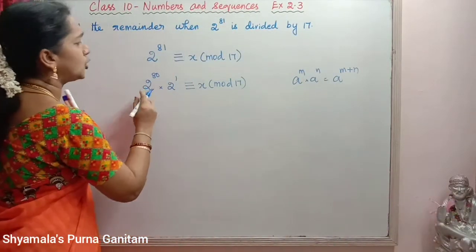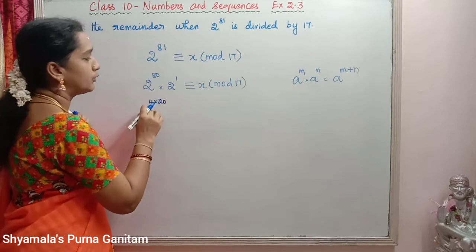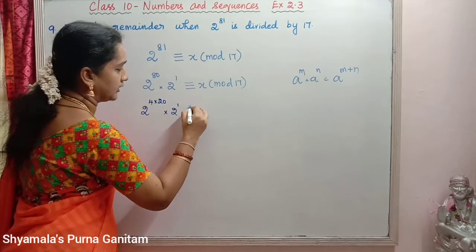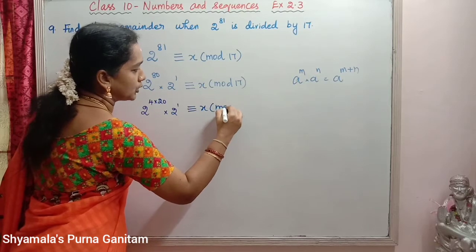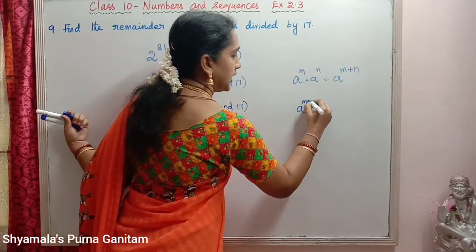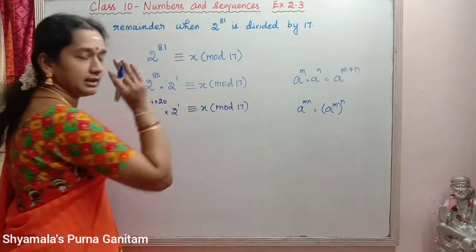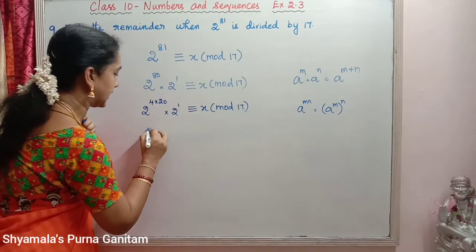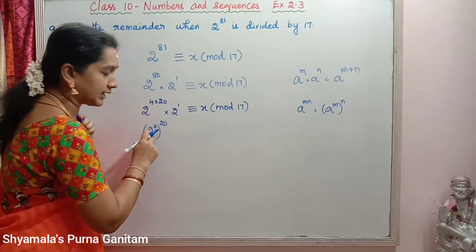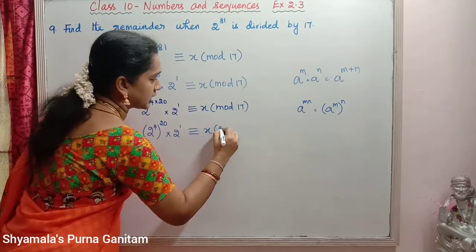Next, we rewrite 2 power 80 as 2 power (4 × 20), since 4 × 20 = 80. Applying the law a power (m×n) = (a power m) whole power n, we write this as (2 power 4) whole power 20. So the expression becomes: (2 power 4) whole power 20 × 2 power 1 ≡ x (mod 17).